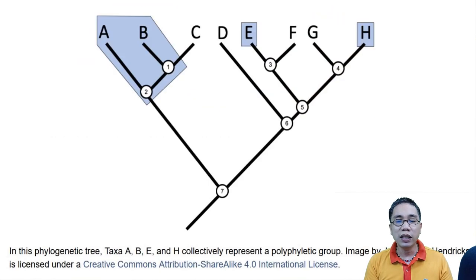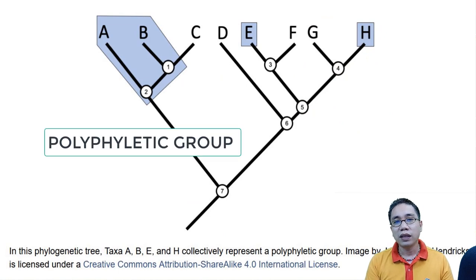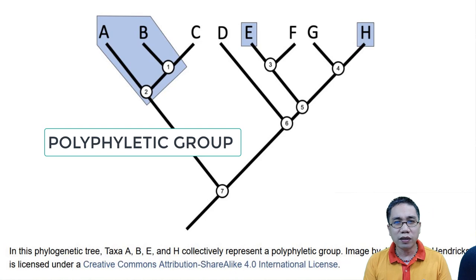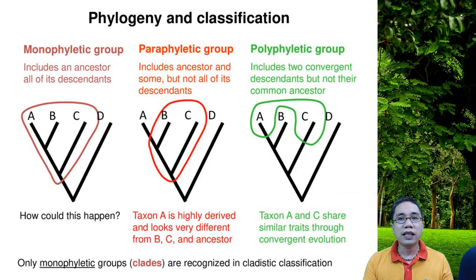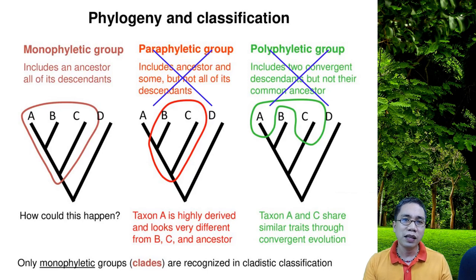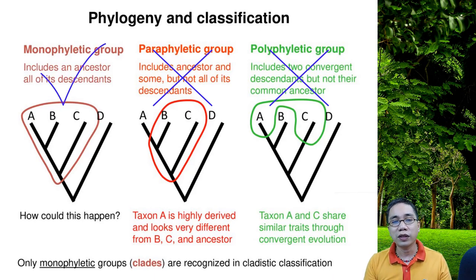You also have your polyphyletic group, in which there are two or more separate groups and each with a separate common ancestor. But obviously, they do not portray an accurate picture of evolutionary history, as they can confuse you. So, better read the explanations in books or texts if you ever encounter these types of groupings.